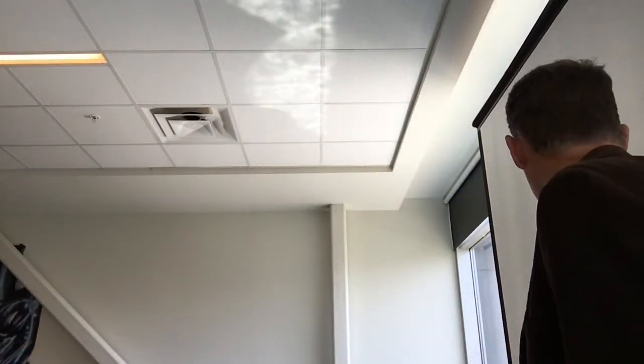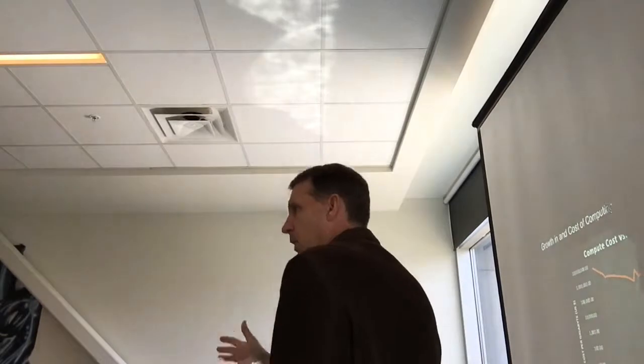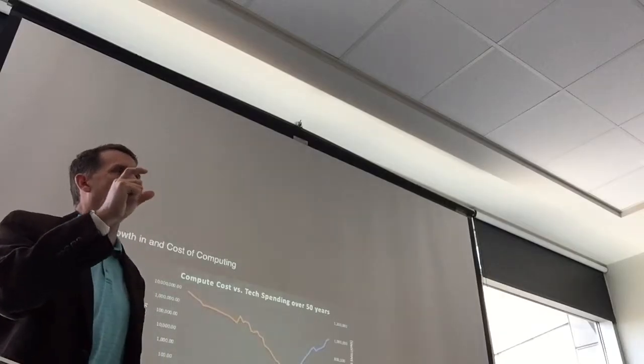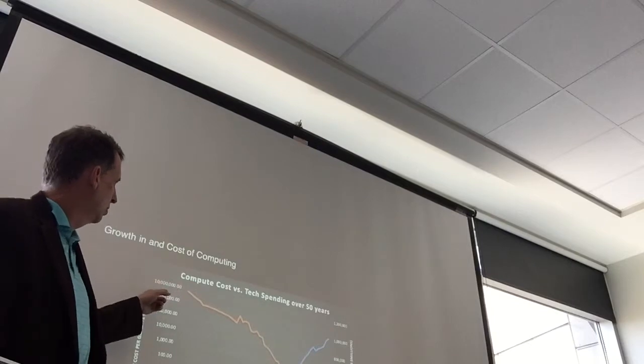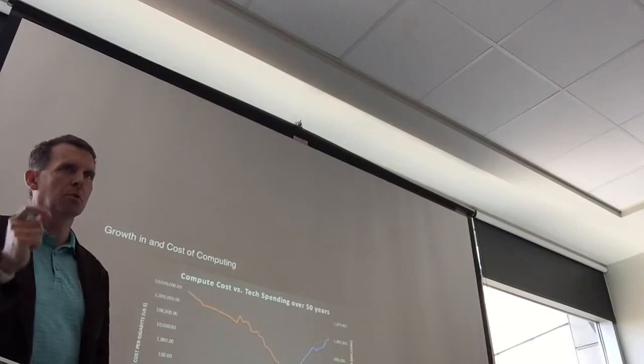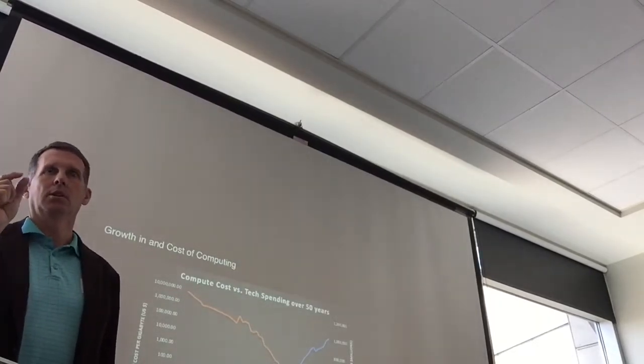The other change though that goes with that is not just the growth, it's also the cost reduction in computing. Any of you have an iPhone? If you were to buy your iPhone in 1991, how much would that iPhone have cost you? Do you have any guesses? It would have cost you about 3.5 million dollars to buy your iPhone in 1991. It would have cost you 1.4 million dollars for the memory alone. If you go back to a gigabyte of disk storage in 1964, it would have cost you 7 million dollars for one gigabyte of disk storage.